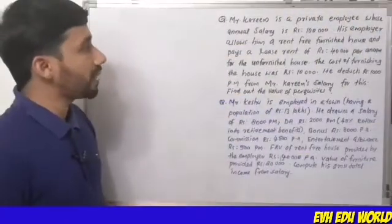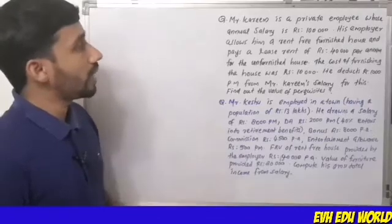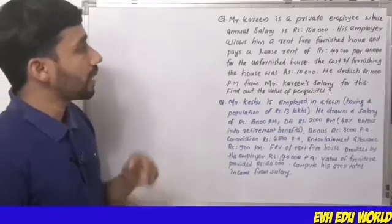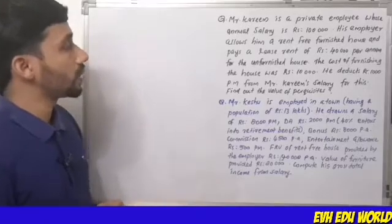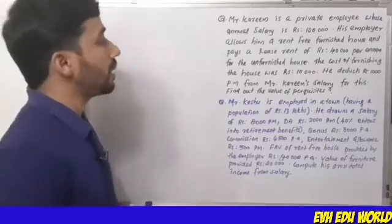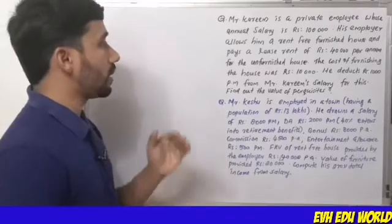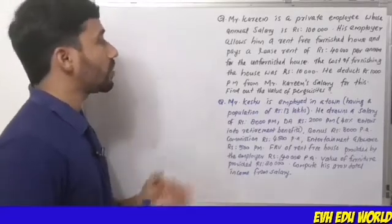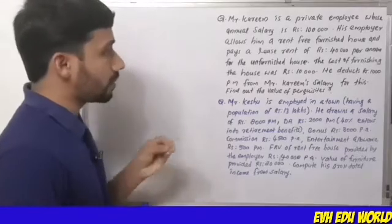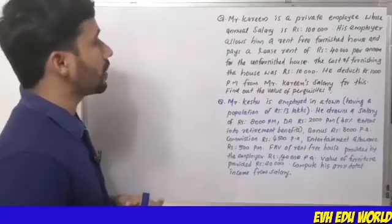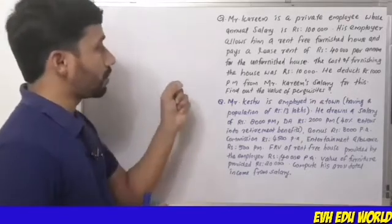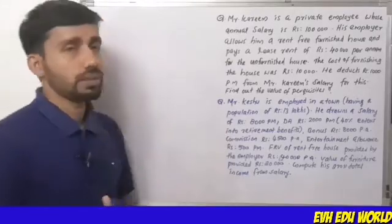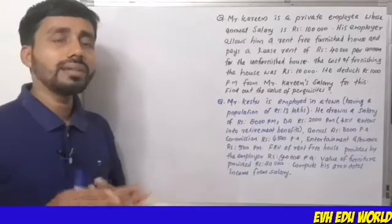Mr. Kareem is a private employee whose annual salary is Rs.1 lakh. His employer allows him a rent-free furnished house and pays a lease rent of Rs.40,000 per annum for the unfurnished house. The cost of furnishing the house was Rs.10,000. He deducted Rs.10,000 per month from Mr. Kareem's salary for this. Find out the value of perquisite.